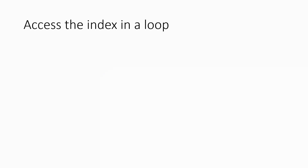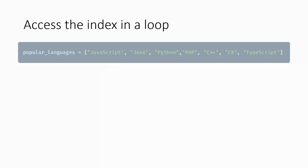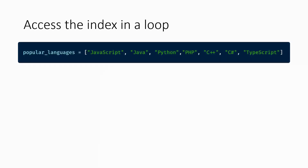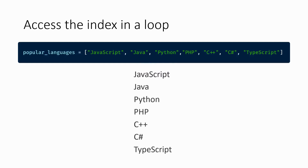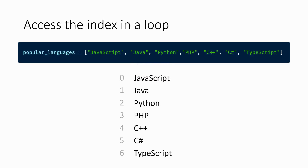Many times you'll need to access the loop index while running a for loop. For example, let's say you want to print out the names of the most popular programming languages in GitHub in a sequential manner while also identifying its position in the list. To do this you need to have access to the index of the list element while running the loop.